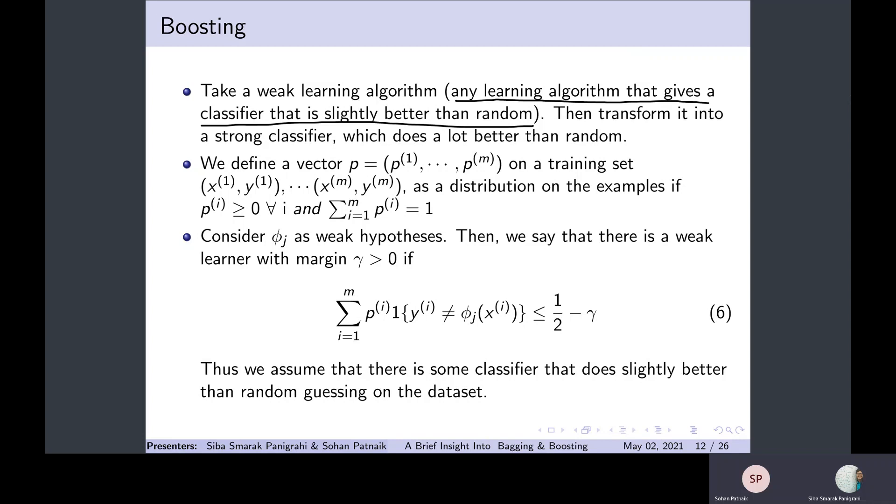Now let us define a vector p with elements p1, p2, till pm on the training set (x1, y1), (x2, y2), till (xm, ym). The distribution of sampling these training points is given by the vector p, where p1 is the probability of sampling the data point (x1, y1), and pm is the probability of sampling the data point (xm, ym). Moreover, the sum of all the probabilities for a probability distribution should equal one.